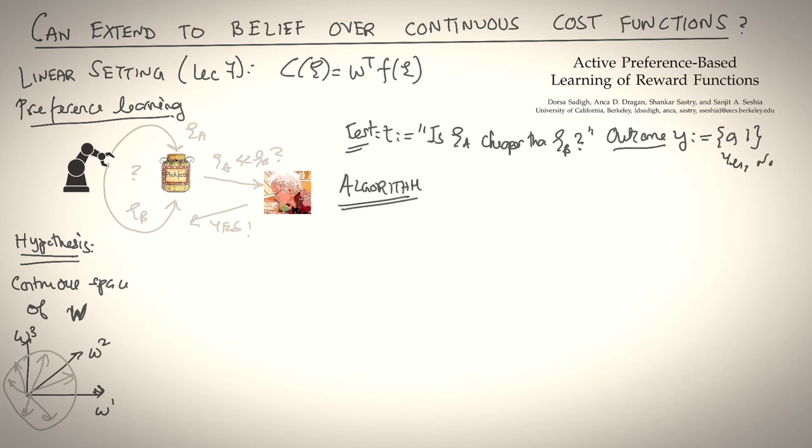The outcome is binary. Either it's yes, it's cheaper, or no, it's not. So we're going to apply a very similar algorithm to generalized binary search in this setting. Again, the algorithm, like before, initializes with a prior over W. For example, W is in a unit ball. It now has to search over the set of potential questions that it can ask the human. Think of a question as a pair of trajectories, psi_A and psi_B, that it will ask the human to compare. To visualize this, we're not going to look at the trajectories, but instead look at the features of psi_A and psi_B trajectories, since that's what matters. So, you know, let a two-dimensional feature space be f1 and f2.